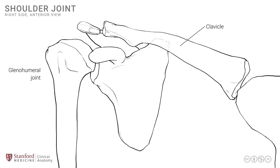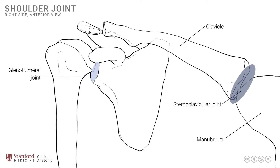The glenohumeral joint — between the head of the humerus and the glenoid cavity — is seen here for orientation. At the medial end of the clavicle, it articulates with the manubrium, the superior part of the sternum, forming the sternoclavicular joint. This is also a synovial joint, but a very stable one, bounded by ligaments and capsule. It is in fact the only true bony articulation between the entire upper limb and the axial skeleton.